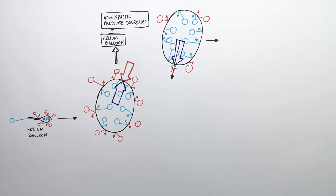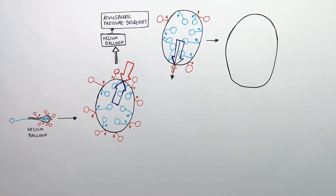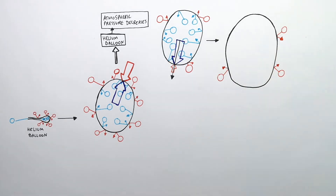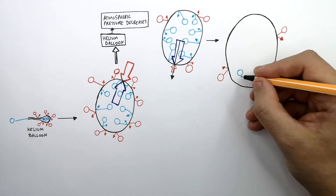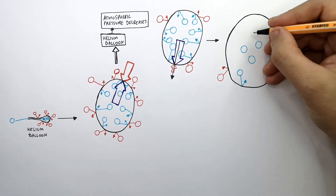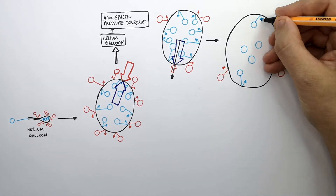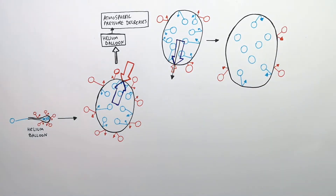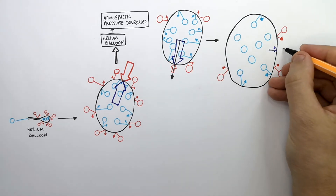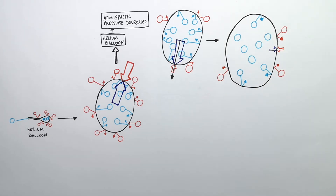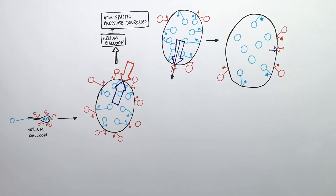The volume of the balloon increases due to the decreased atmospheric pressure acting on the balloon. Due to the increased volume, there are fewer collisions inside the balloon. Therefore there is going to be a lower net force acting on the surface inside the balloon, and this is going to be equal to the atmospheric pressure outside of the balloon, and it will therefore stop expanding.